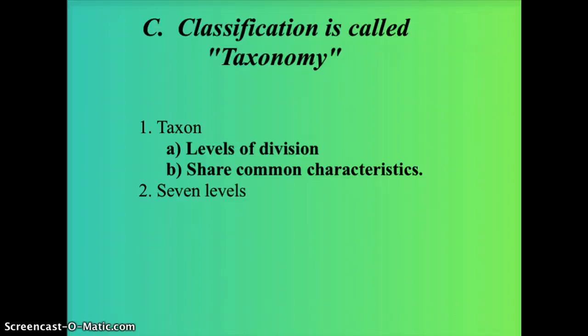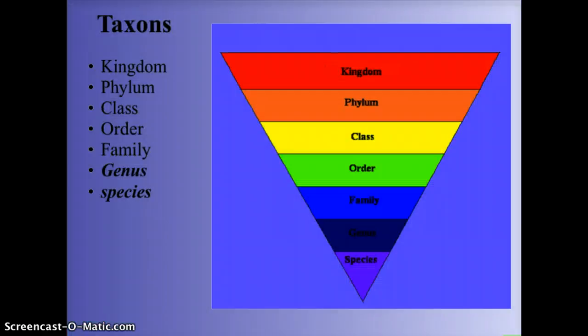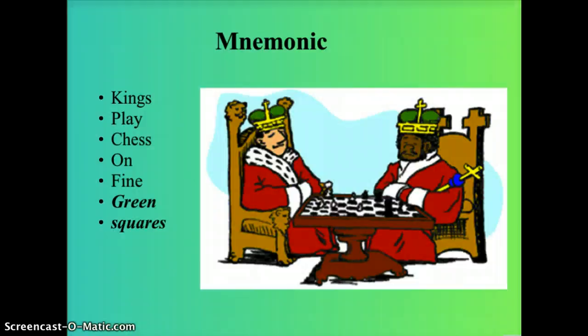This classification system is called taxonomy, and it gets its name from the fact that the levels or divisions of organization are called taxons. We group common organisms based on their characteristics — things they do, abilities that make them similar. There are seven taxons in the taxonomic system: kingdom, phylum, class, order, family, genus, and species, with species being the most individual.